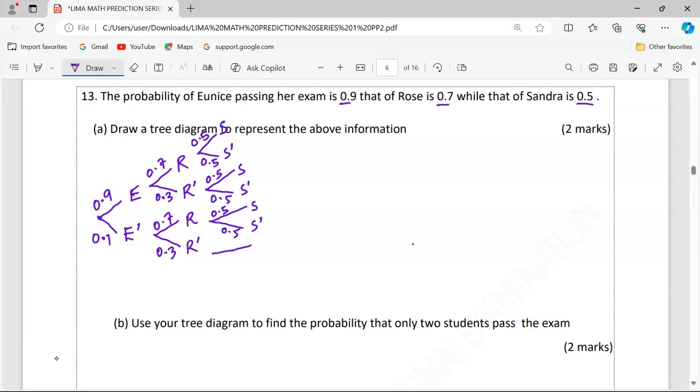And finally, we will have the same Sandra's pass, Sandra's fail. The pass, 0.5, and the failing, 0.5.